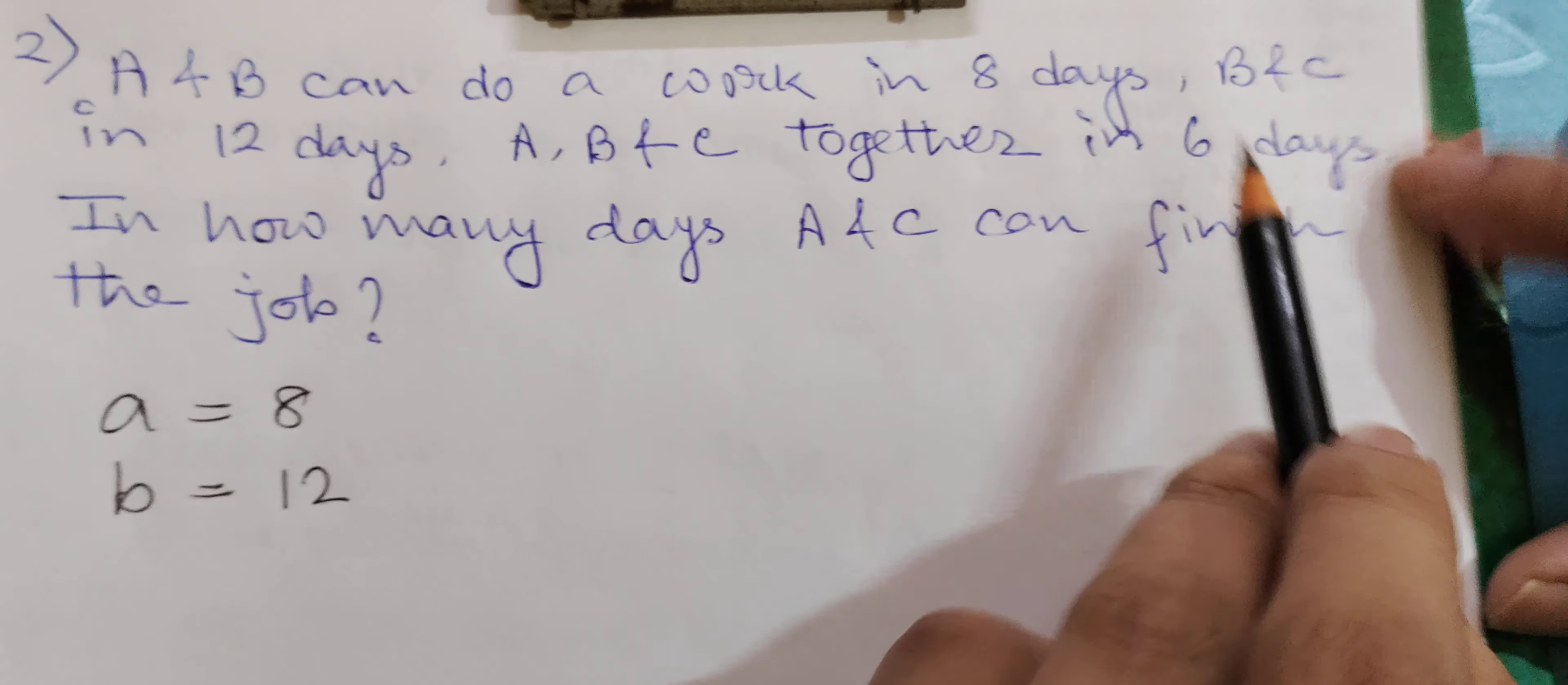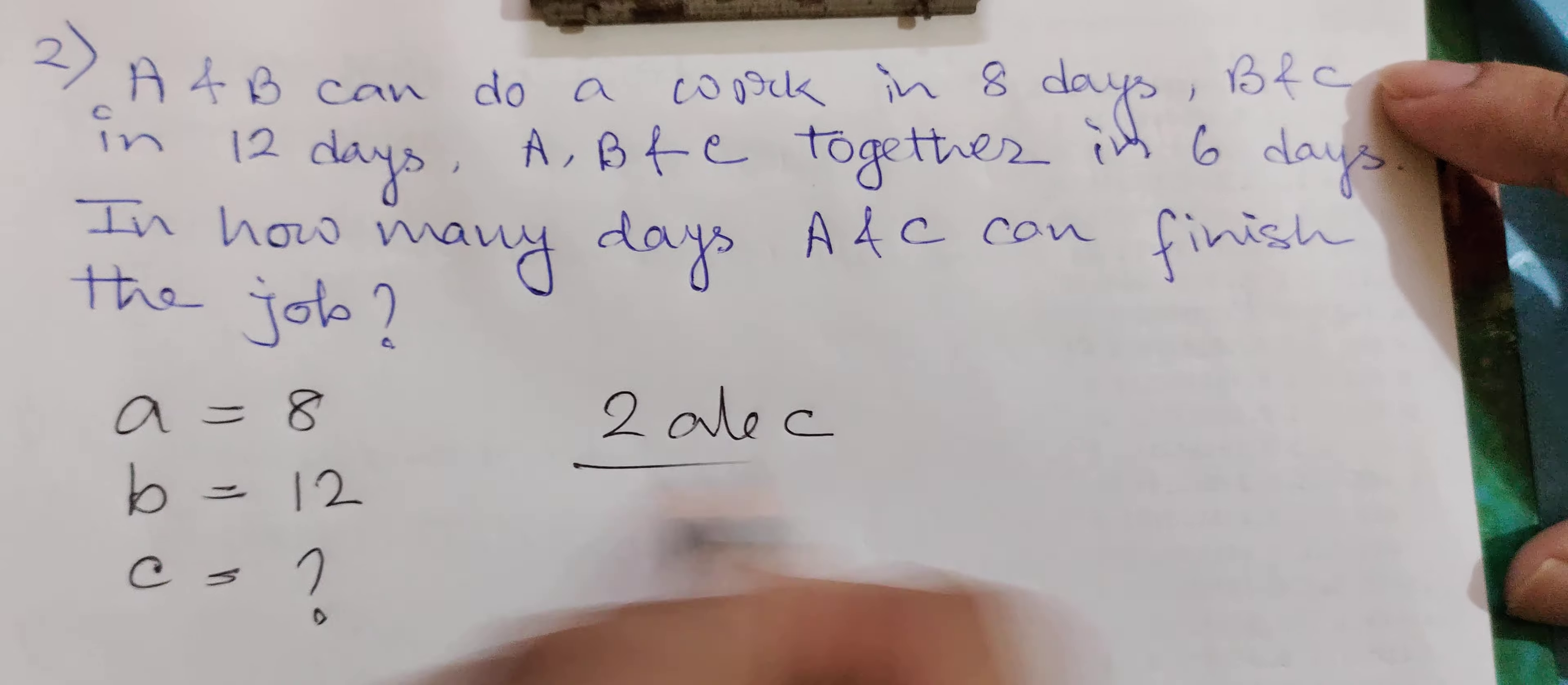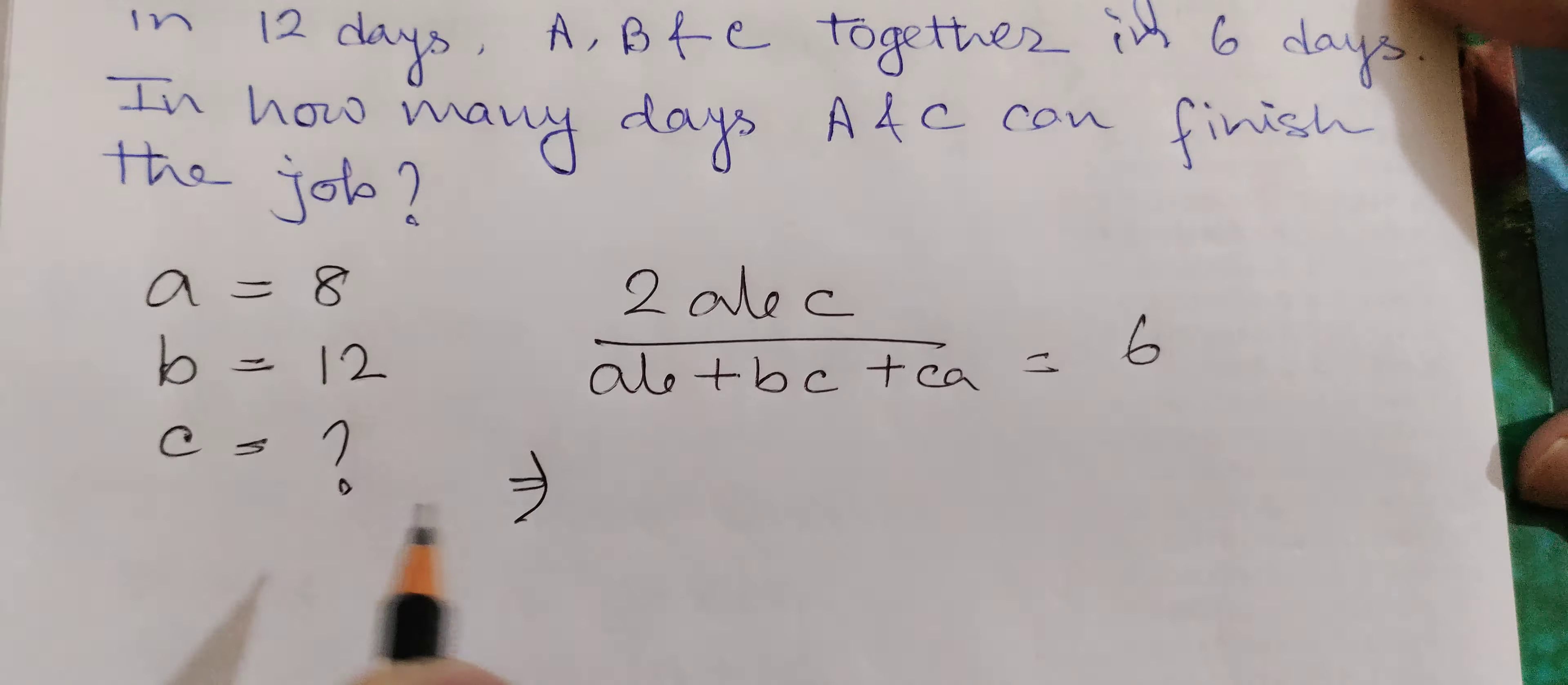A, B, C together can do the work in 6 days. In how many days can A and C finish? So c is not given, I have to calculate it. If they all work together, that means this formula equals 6. Now from this I have to calculate c.